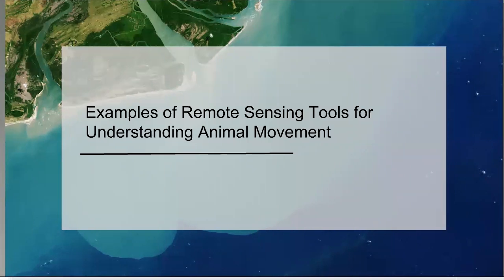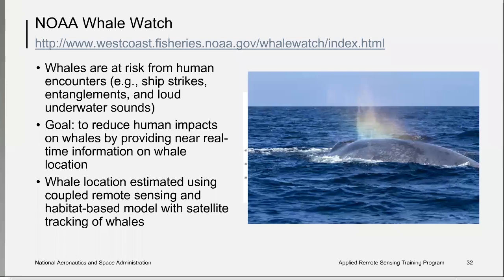A number of researchers have taken this type of research a step further to develop web tools for near-real-time use by the user community, including resource managers, fishers, and other scientists. Many of these tools are the result of NASA-funded applied science research. The first tool is the NOAA Whale Watch tool, implemented for the west coast of the US. Whales are often at risk from ship strikes, entanglement with fishing gear, and loud underwater sounds. The goal of this tool is to reduce human impacts by providing near-real-time information on whale location to mariners, fishers, and others.